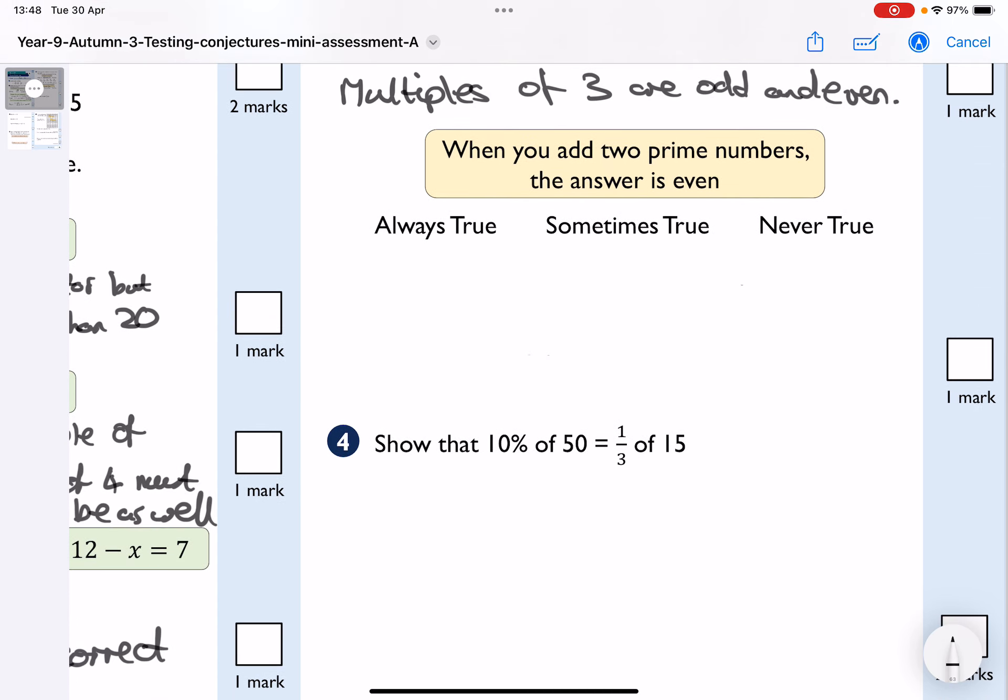Right, when you add two prime numbers, the answer is even. Well, if I look at the prime numbers, I've got two, which is the only even prime. Then I've got three, five, seven, eleven, and so on. The rest of the prime numbers are odd.